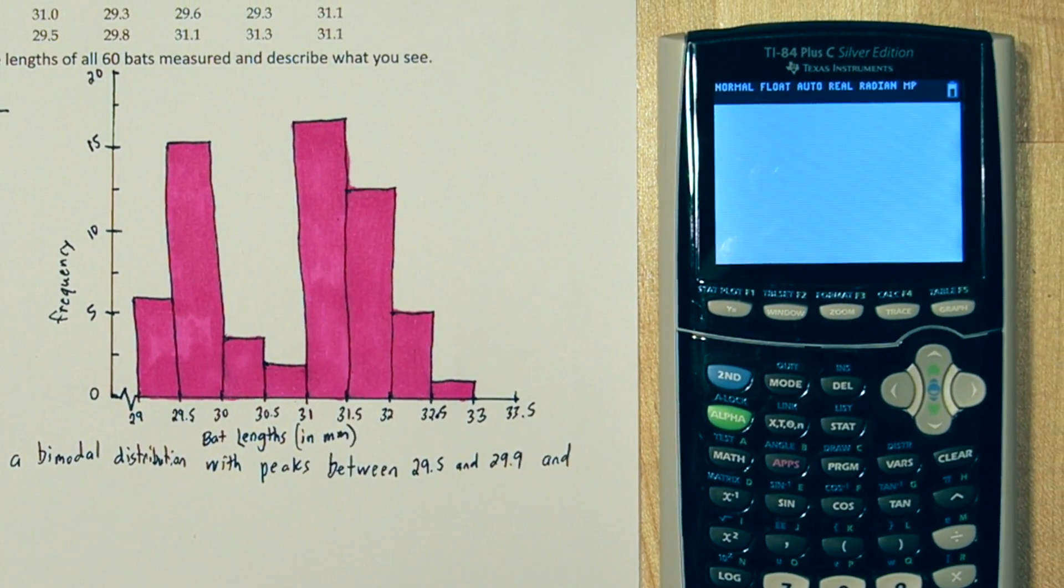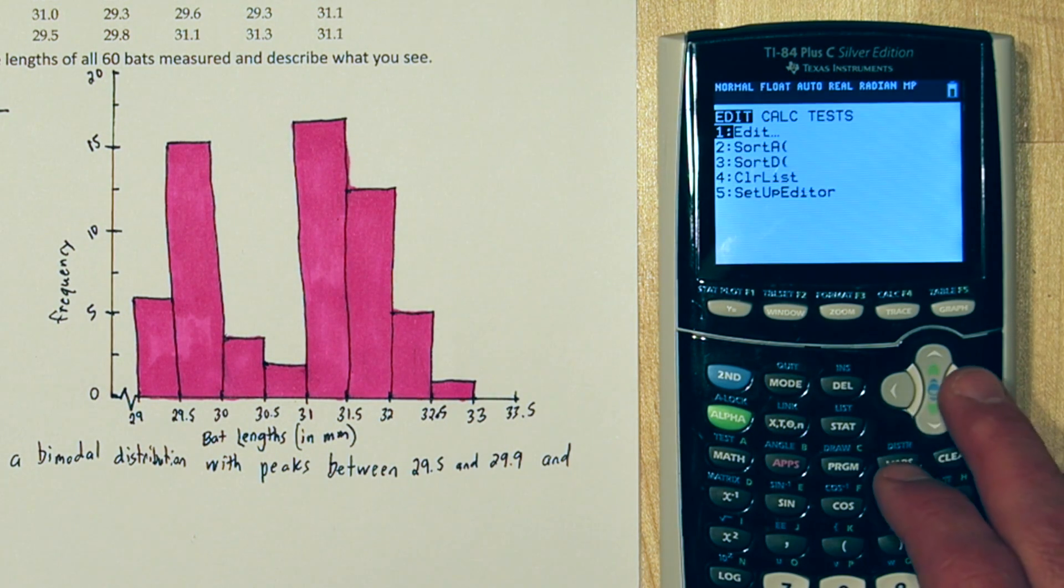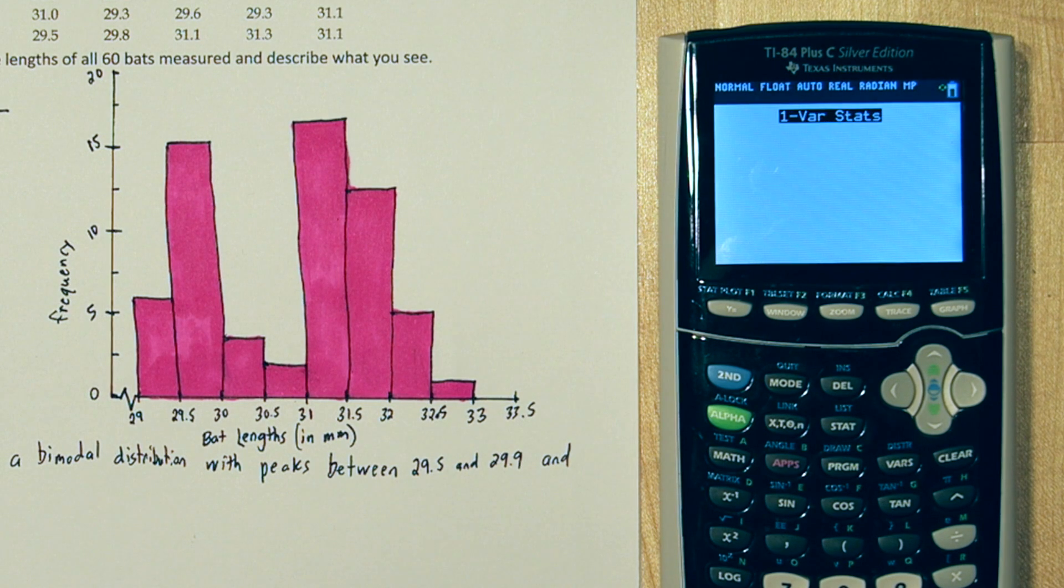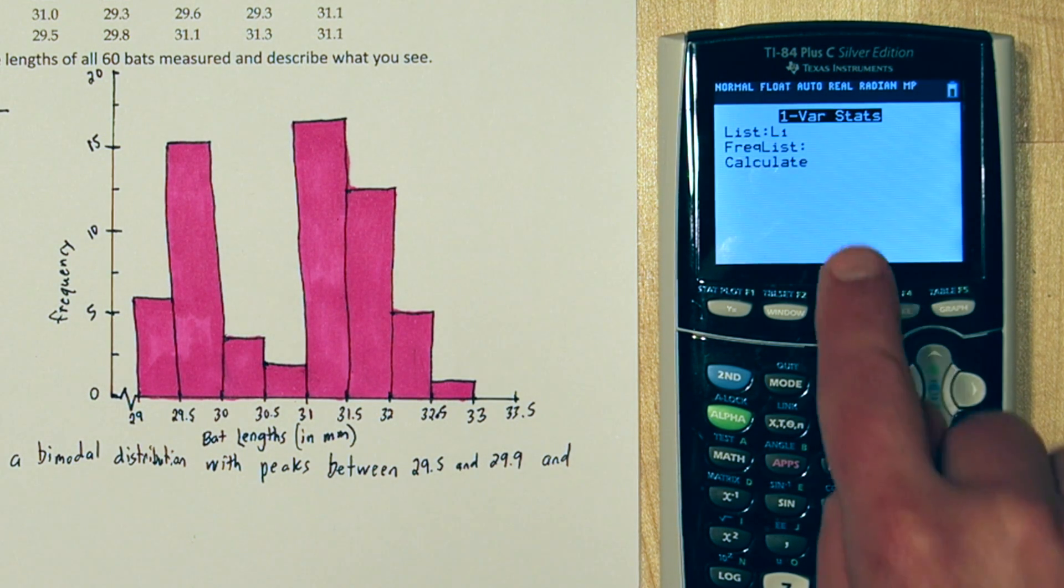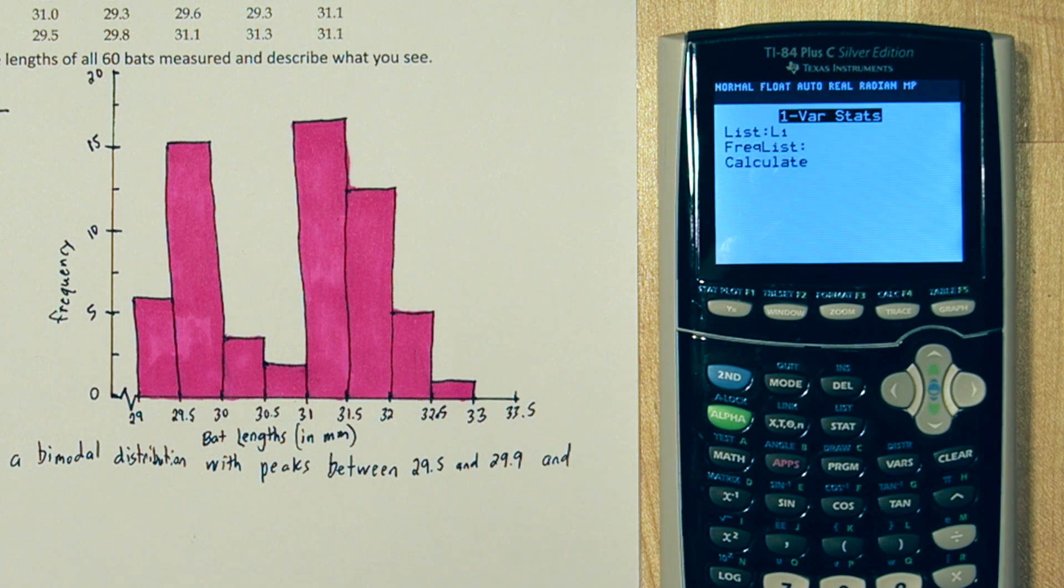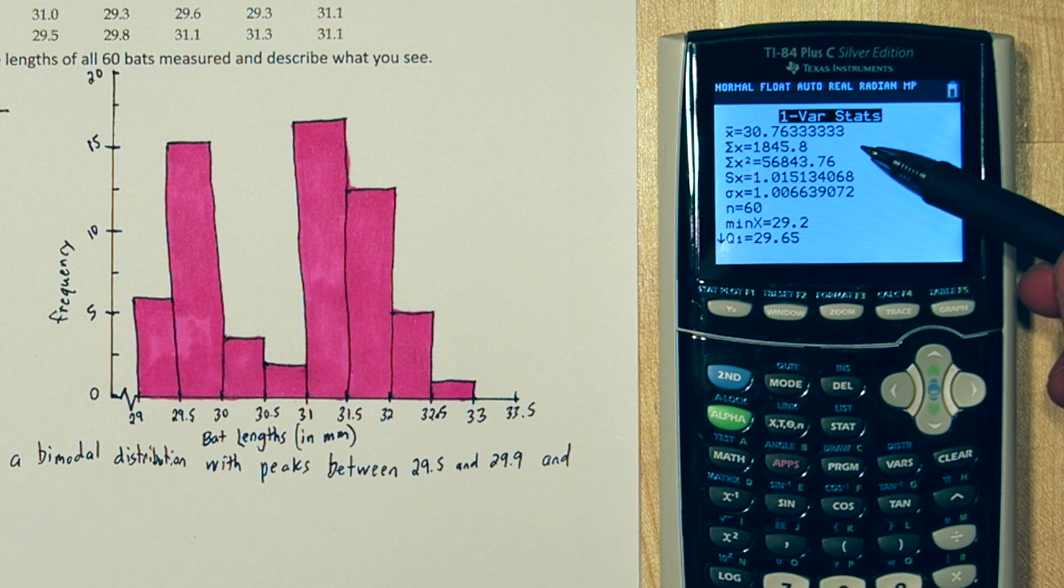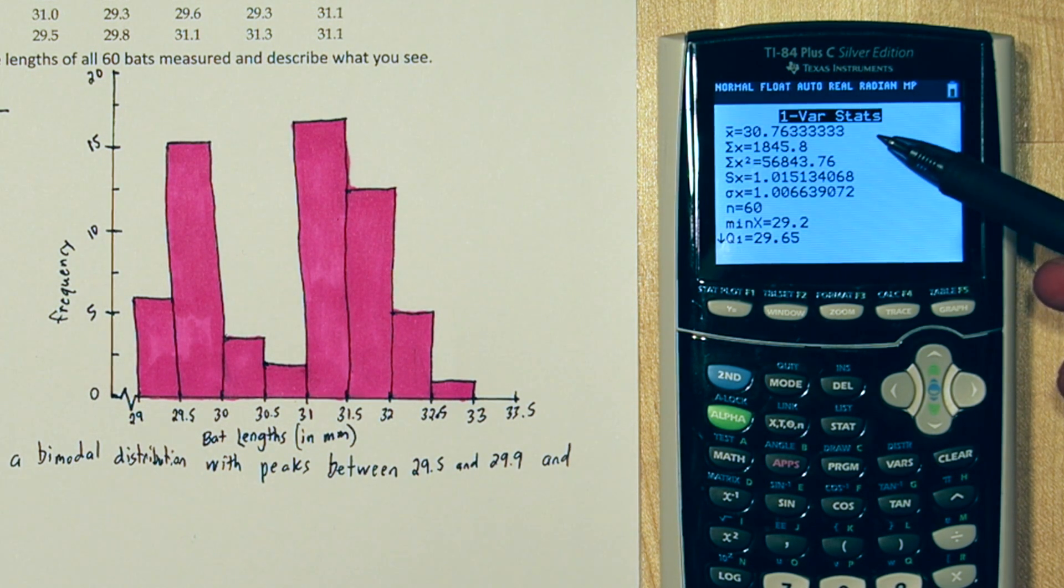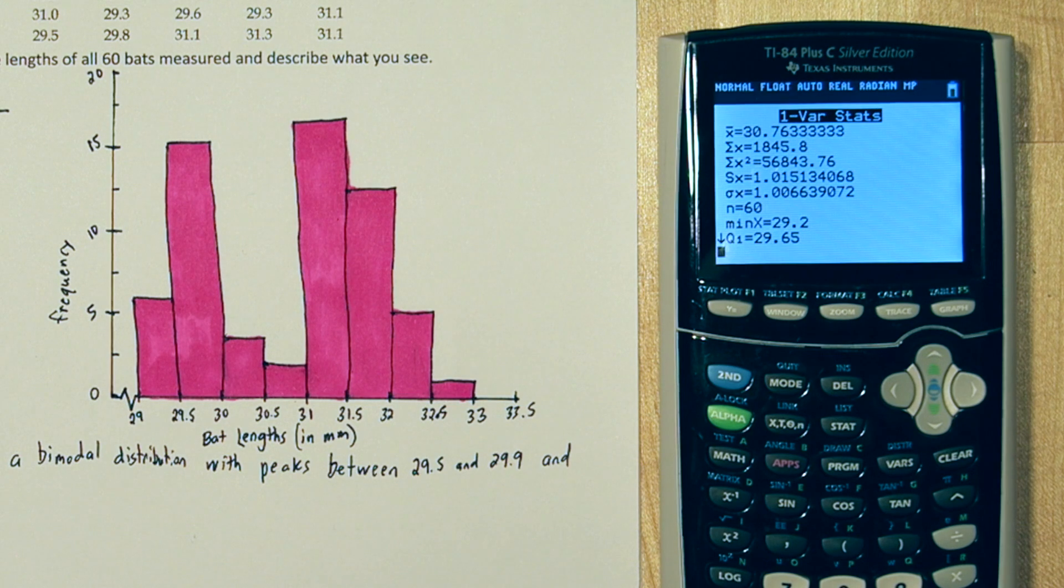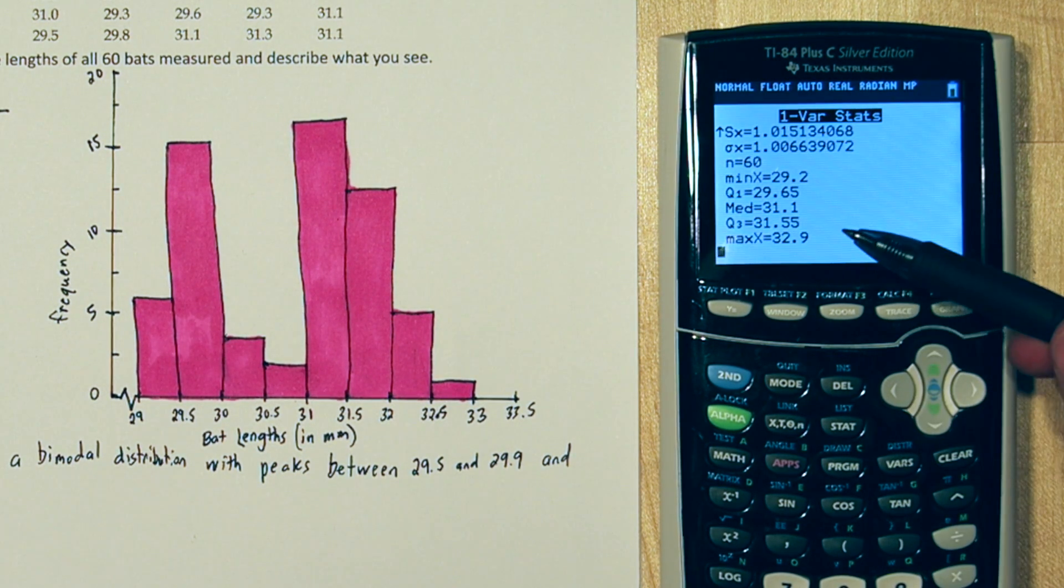So to figure out the measures of center, I put all the rest of the bat lengths into list 1. So here's all the bat lengths listed in list 1. If we press STAT, and we go over to CALCULATE, choose 1VAR STATS, and it says what do you want to run it on? List 1. Frequency, just leave blank, and press ENTER on CALCULATE. Now here's some measures of center. The first one is the mean, 30.763 repeating. Now if we scroll down a little bit, we see the median is 31.1. Those are both excellent measures of center.